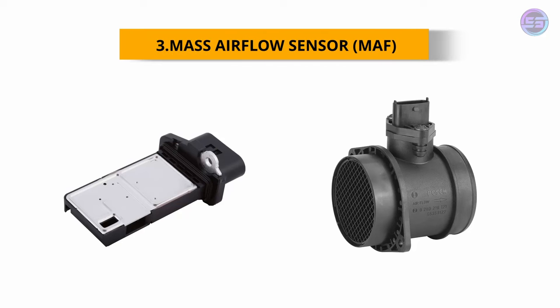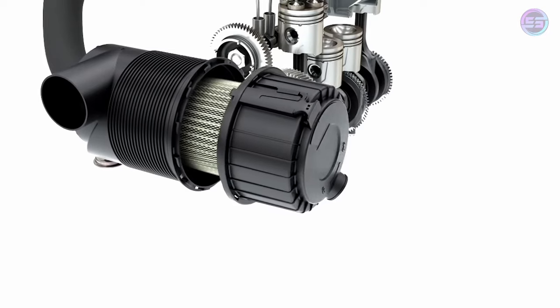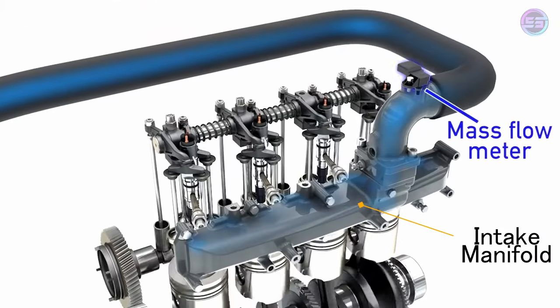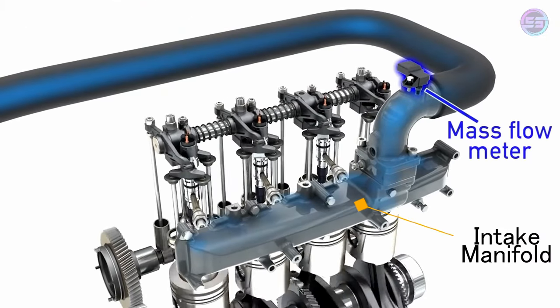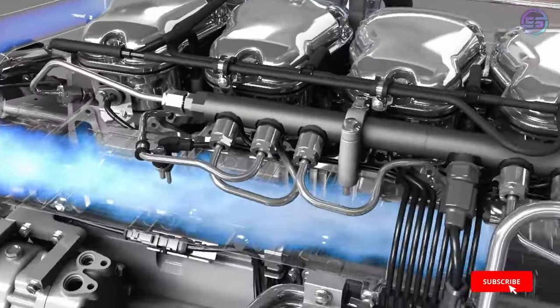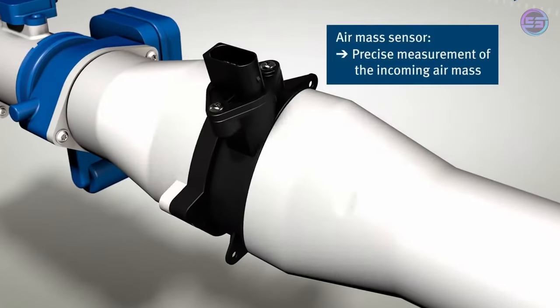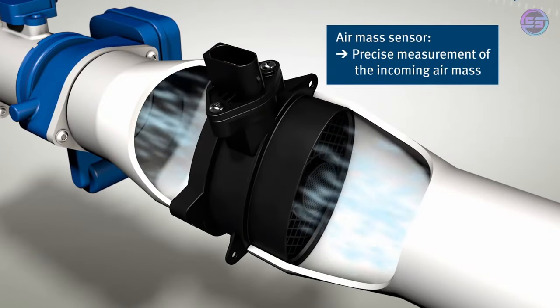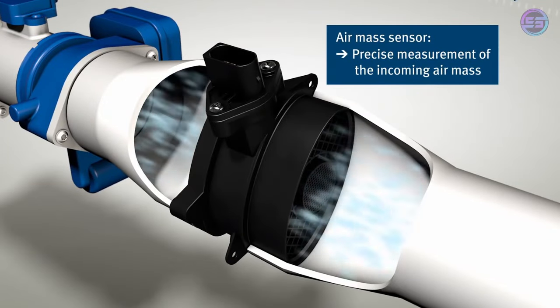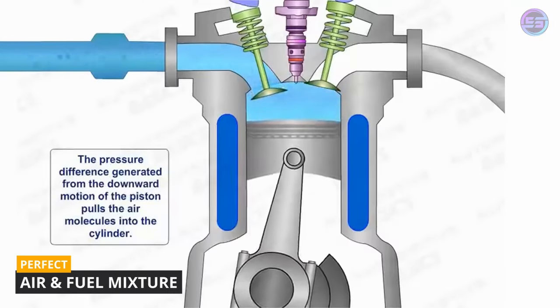Number three, the mass airflow sensor. The mass airflow sensor is located between the air filter and the engine's intake manifold. It is used to calculate the amount of air that enters the engine during the intake stroke. The measuring of air helps the ECU to determine how much fuel must be added for perfect air and fuel mixture to get better results.